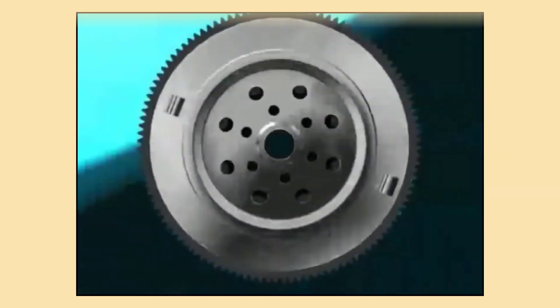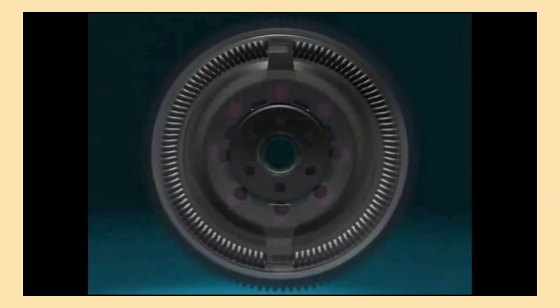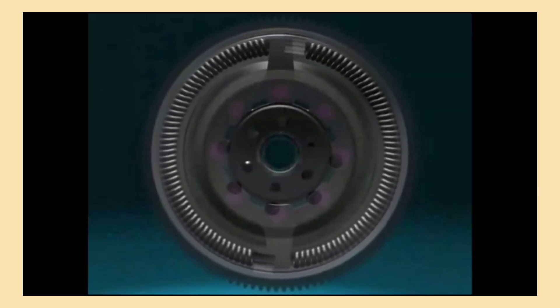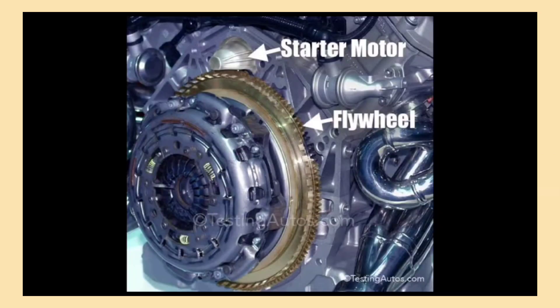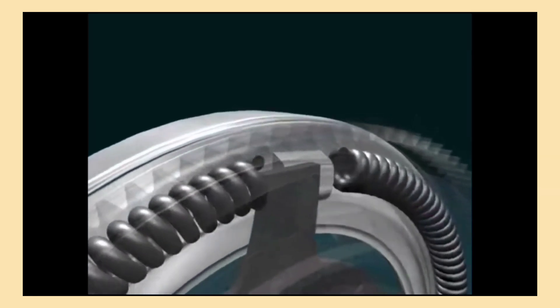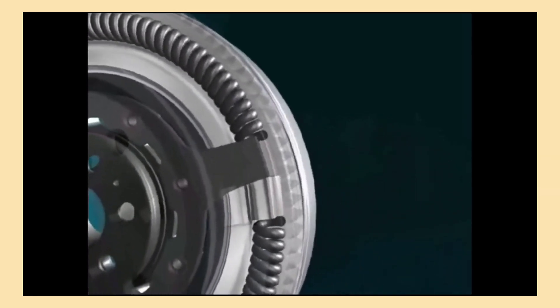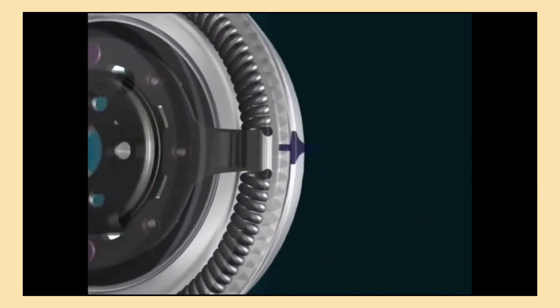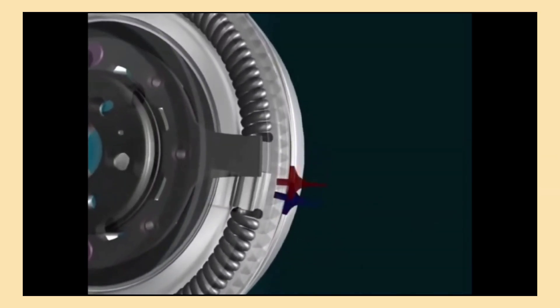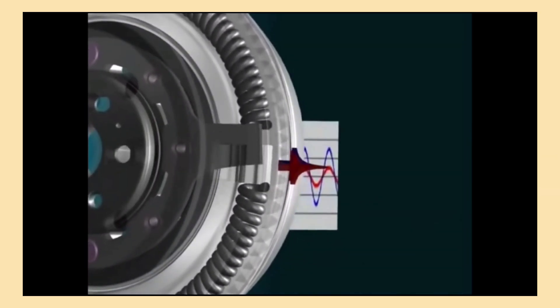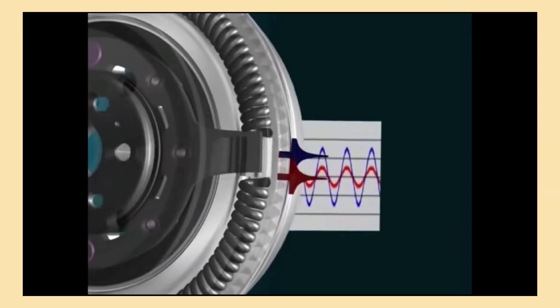Once the engine goes through a burst of power, there's a moment when the power decreases or the engine is not firing. During this time the flywheel helps to keep things moving smoothly. It releases the energy it stored earlier, making sure the engine continues to rotate at a steady speed. By doing this, the flywheel fills in the gaps between the engine's power strokes, ensuring the engine keeps turning smoothly without jerking or stalling.